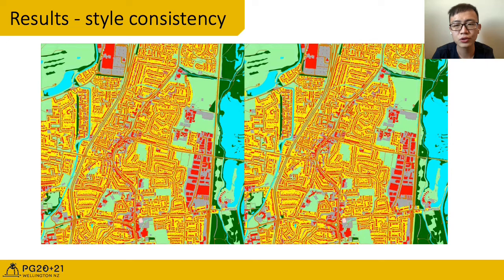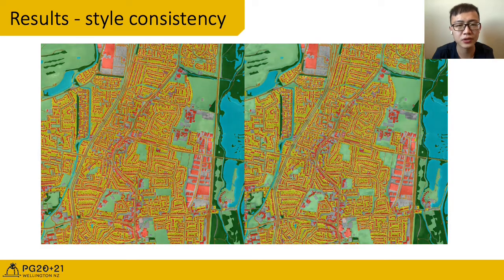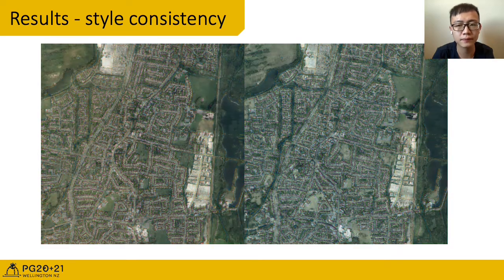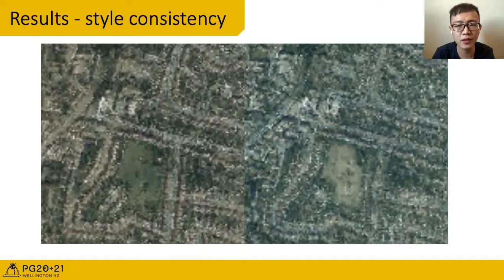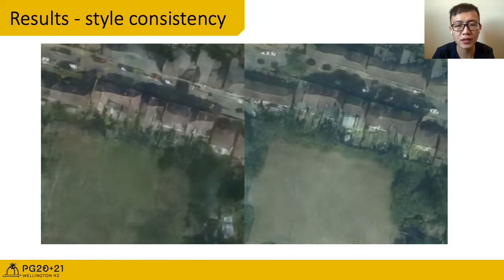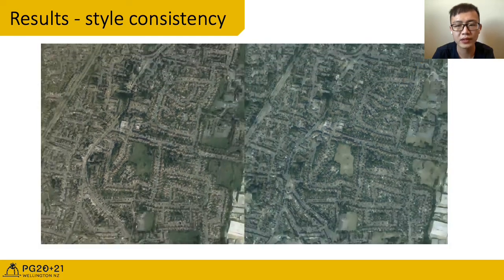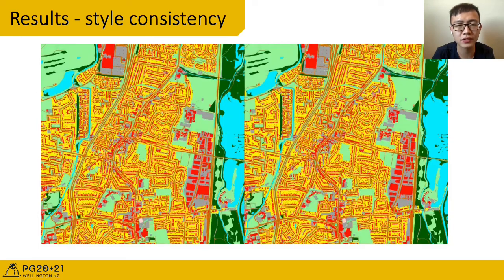This slide shows our style consistency results. We use the same map data as input to create two satellite images of different styles. We use them as color guidance images to create next scale level results. In this way, we preserve a unique style at all scales.